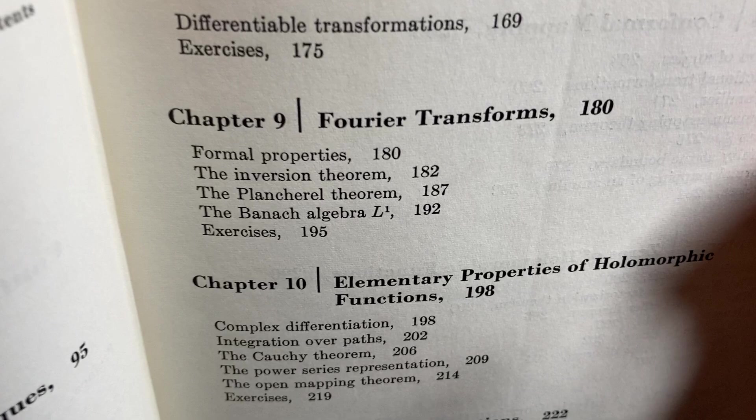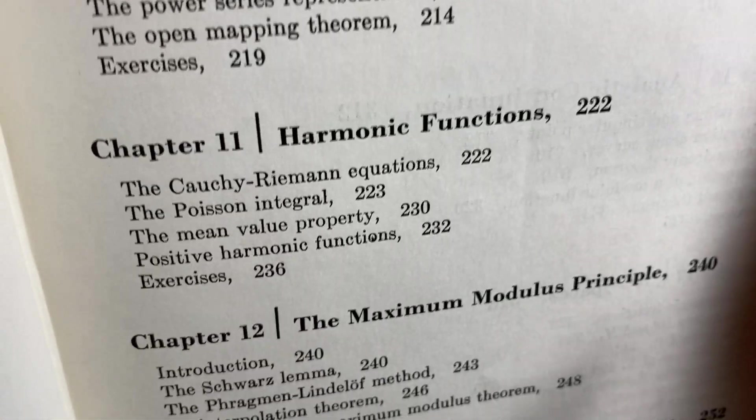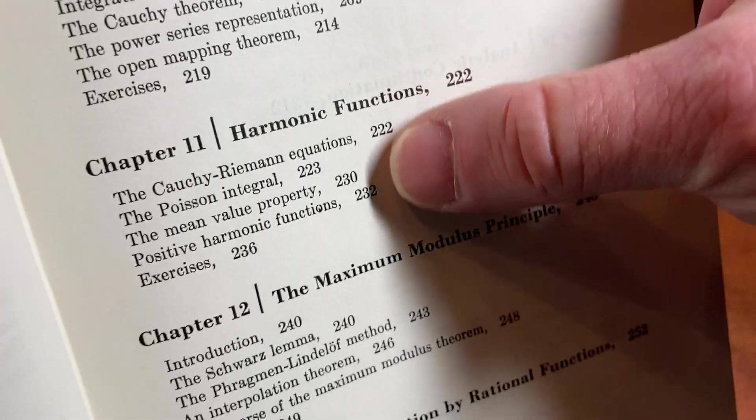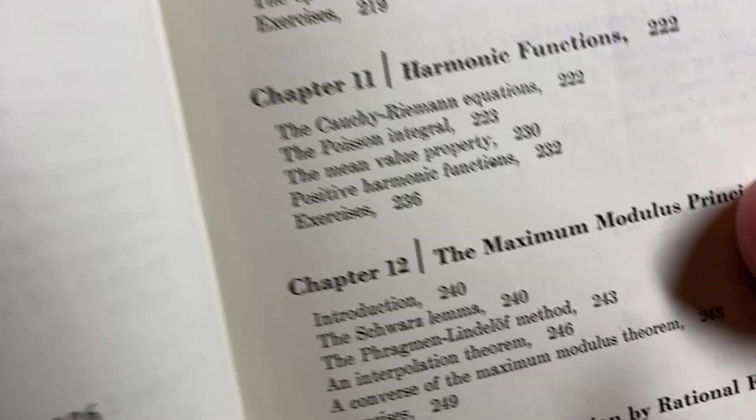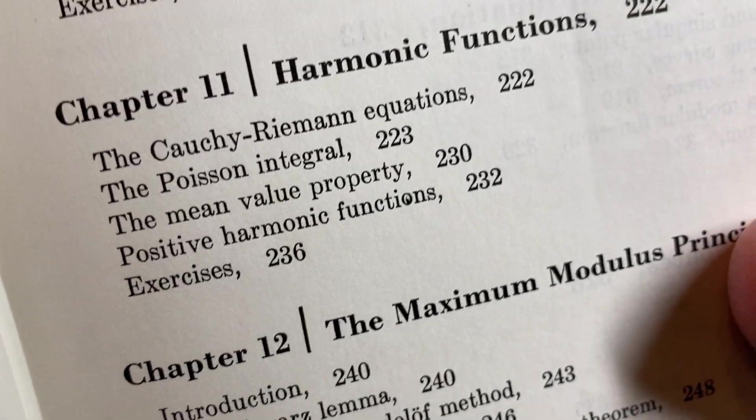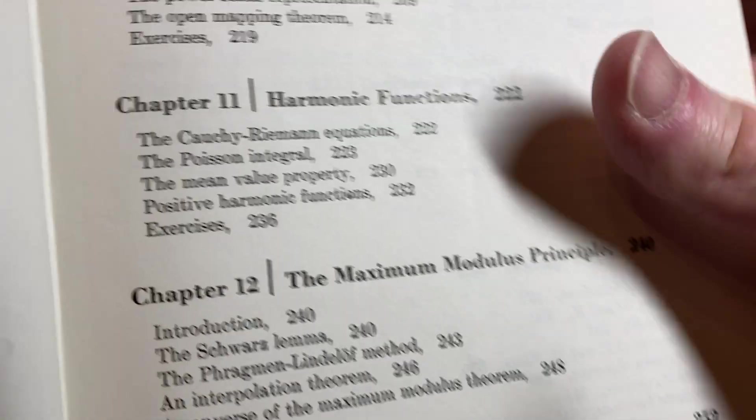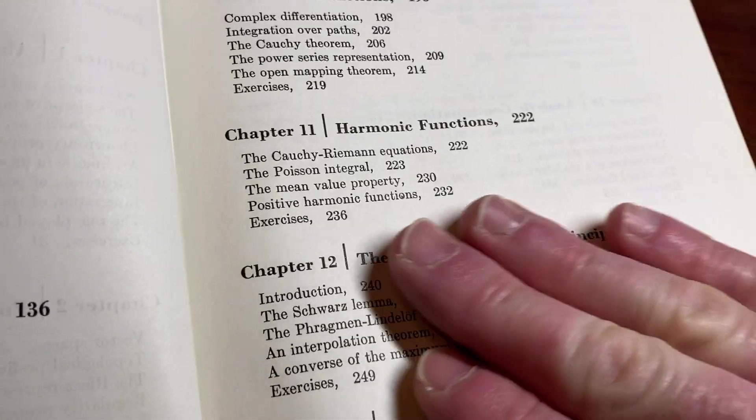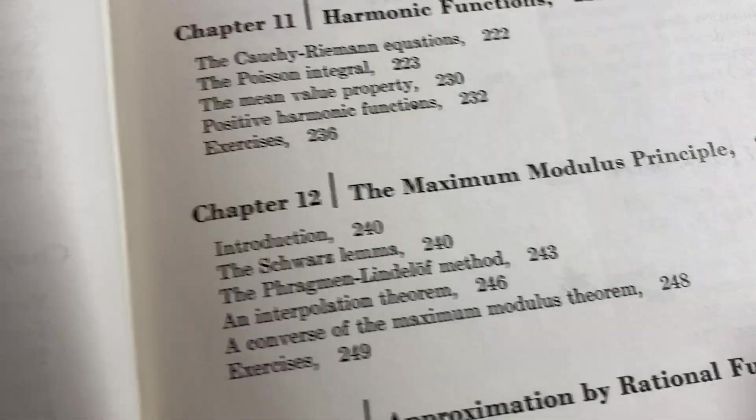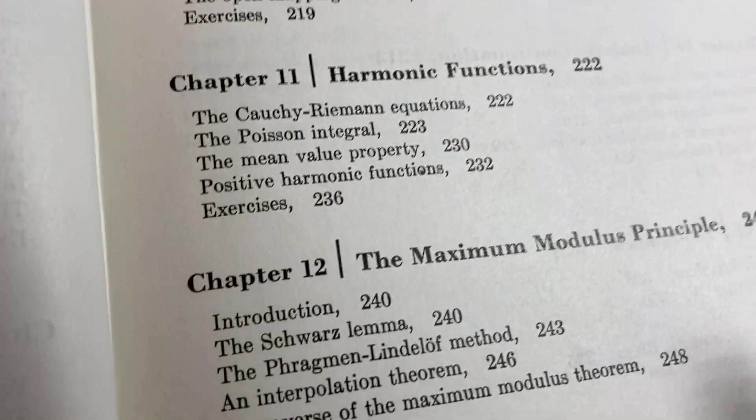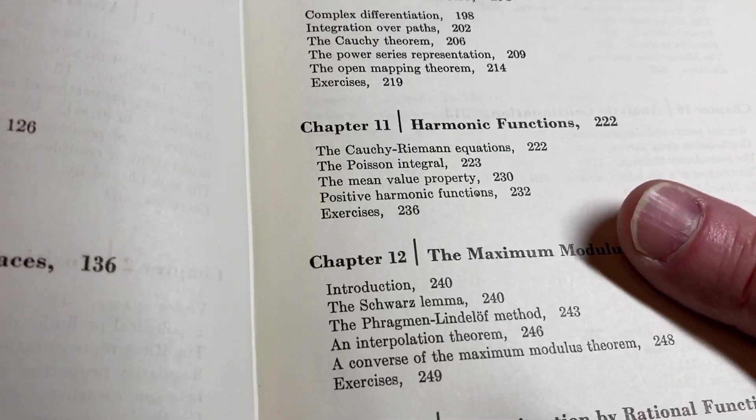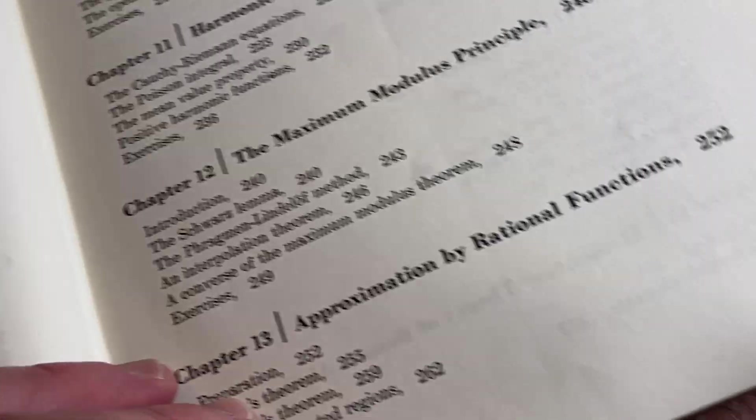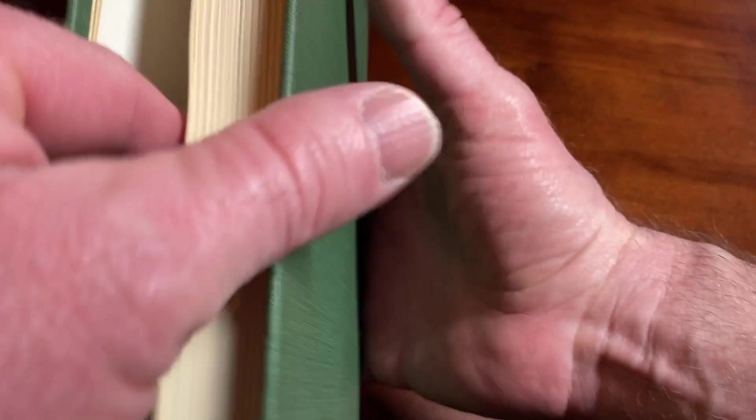As a collector, this is one of the core pieces of any math book collection. This is a very very famous book, most famous in the world for sure. Fourier transforms, harmonic functions, the Cauchy-Riemann equations—really good stuff here. I never actually used this book for a course.